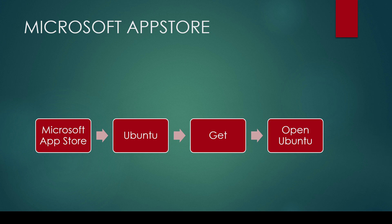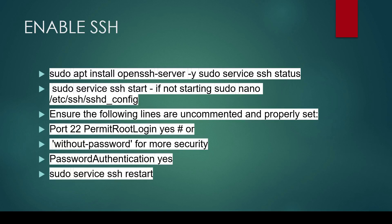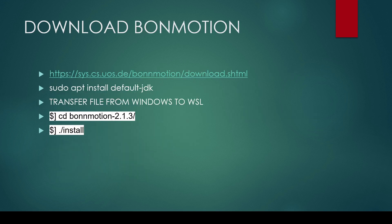After restarting, install Ubuntu from the Microsoft Store. Once installed, you need to enable SSH in order to transfer files using WinSCP. Follow the SSH setup commands, then download a file from the Windows home directory to transfer it to WSL.